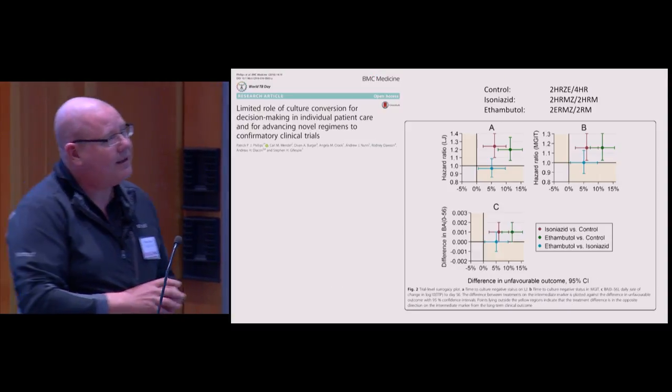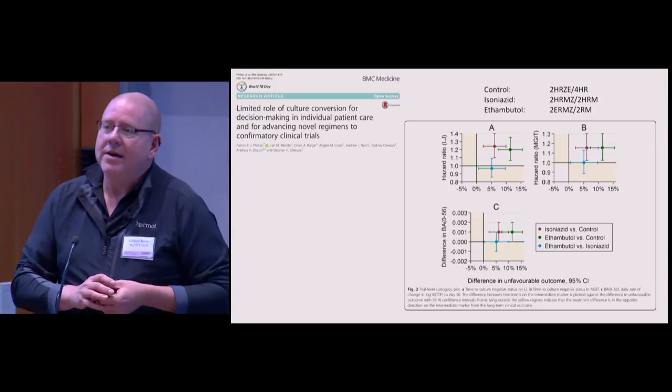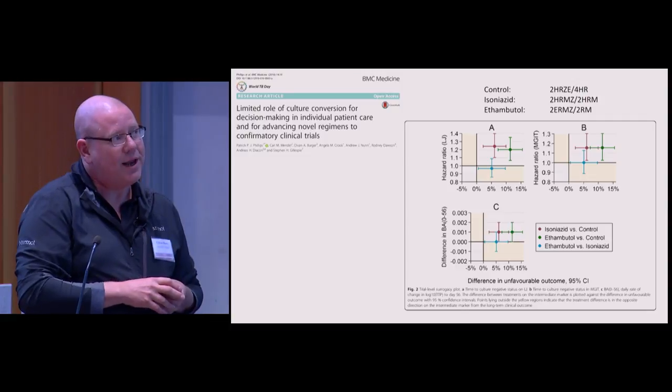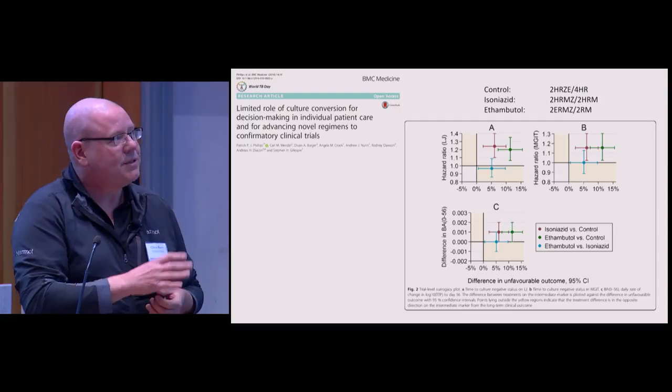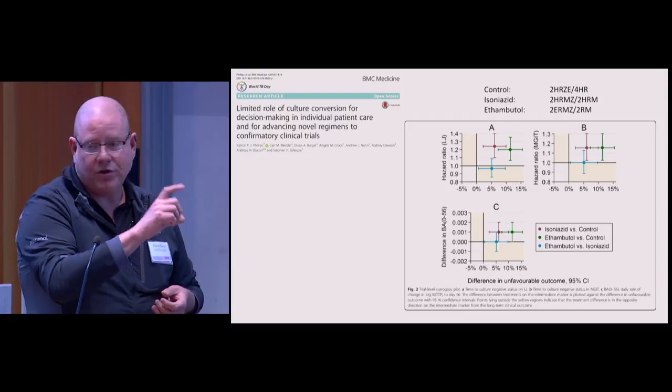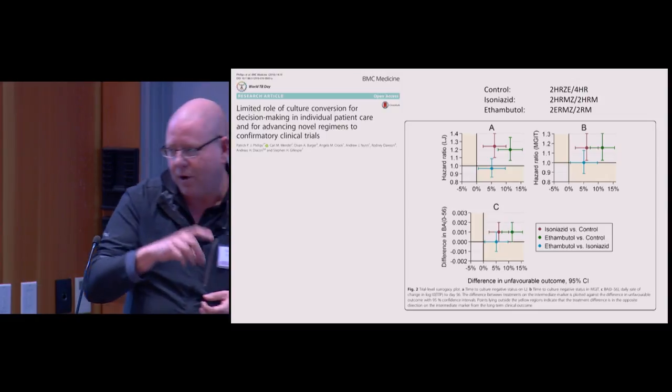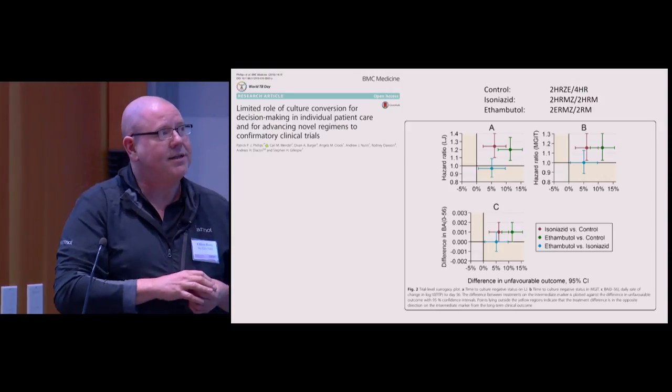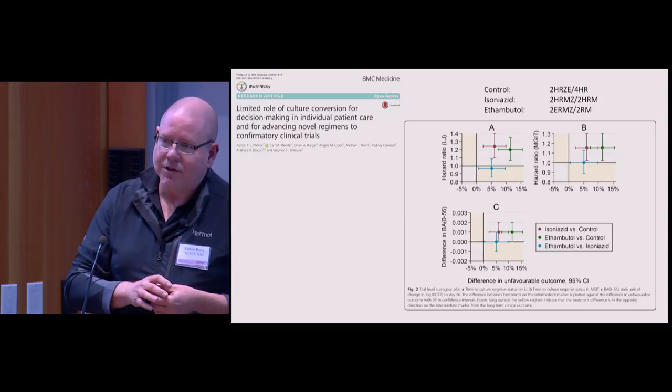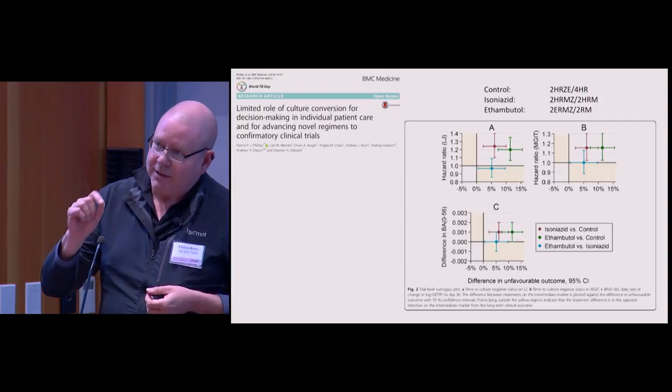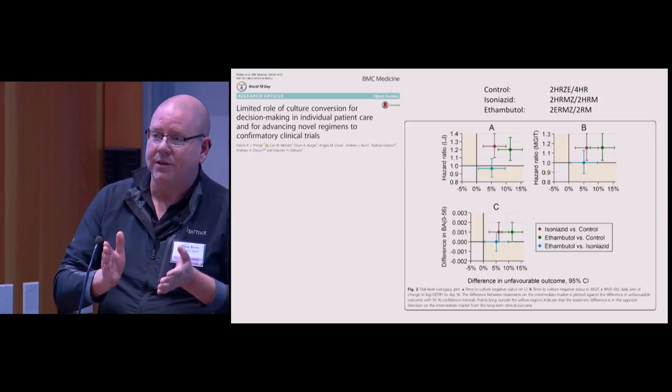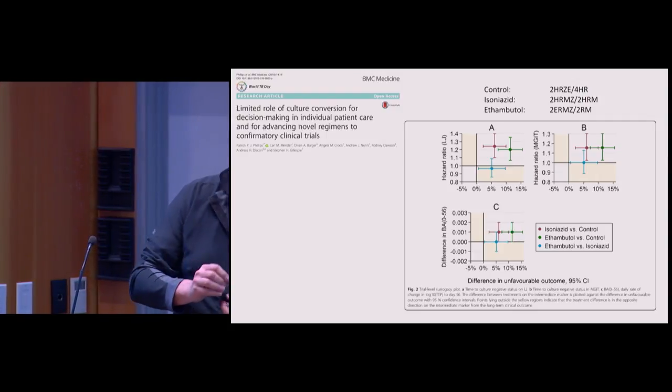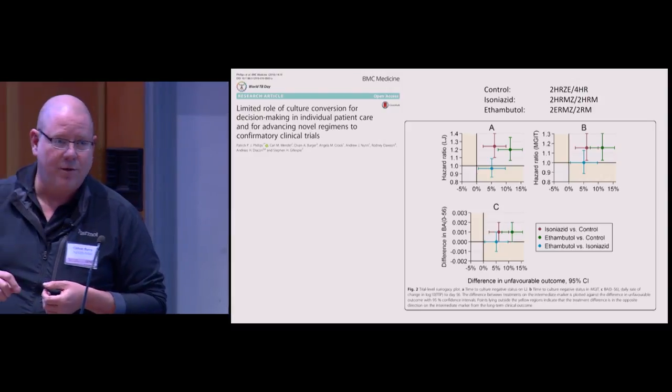The lesson I learned from those trials is that looking just at the sputum was not going to give you the answer for how long you needed to treat patients. This is a reanalysis of the data from the REMOX trial showing three different measurements of culture conversion on the y-axis. The green and red dots, which represent ethambutol versus control and isoniazid versus control, are identical. The culture conversion rates are identical despite the fact that relapse rates are statistically different. What that means is that what you're sampling in the sputum is not telling you what's causing relapse in patients long-term.